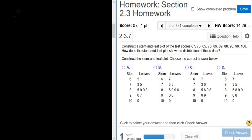When you're making a stem and leaf, I'll go ahead and write the numbers down first. So 67, 73, 85, 75, 89, 89, 88, 90, 98, and 100.